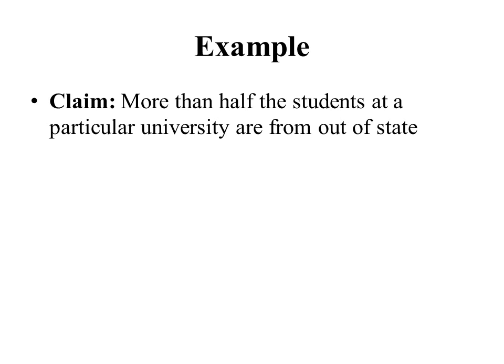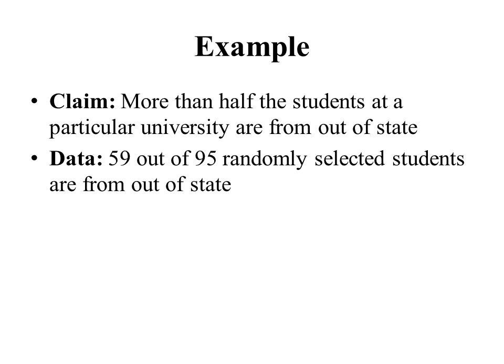I would take the number from out of state, divide by the total number of students, and if that number is greater than one half, the claim is true; if less than half, the claim is false. But that's impossible to do, so instead it makes sense to collect some sample data. Suppose we interviewed 95 students and 59 of them are from out of state. Our sample proportion p-hat comes out to be 0.621, so about 62% of the students in the sample were from out of state.